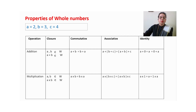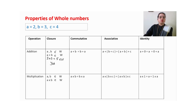Let us substitute the values. Value of a is 2, value of b is 3, so 2 plus 3 equals 5, and 5 is a whole number — so 5 belongs to whole numbers. This means yes, we can observe closure property in addition of whole numbers.